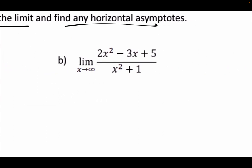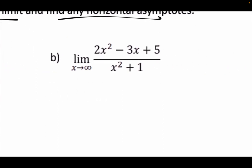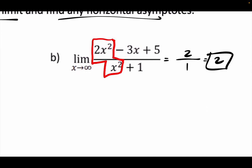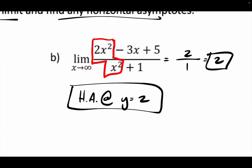Letter b: it's positive infinity, so I don't have to pause — just go. It's equally distributed. The limit is 2 over 1, which is 2. Horizontal asymptote at y = 2 — same value. When it's equally distributed, the horizontal asymptote and the limit are always at the same spot. Same for bottom-heavy — it's always zero. The only difference is top-heavy: that gives positive or negative infinity and no horizontal asymptote.